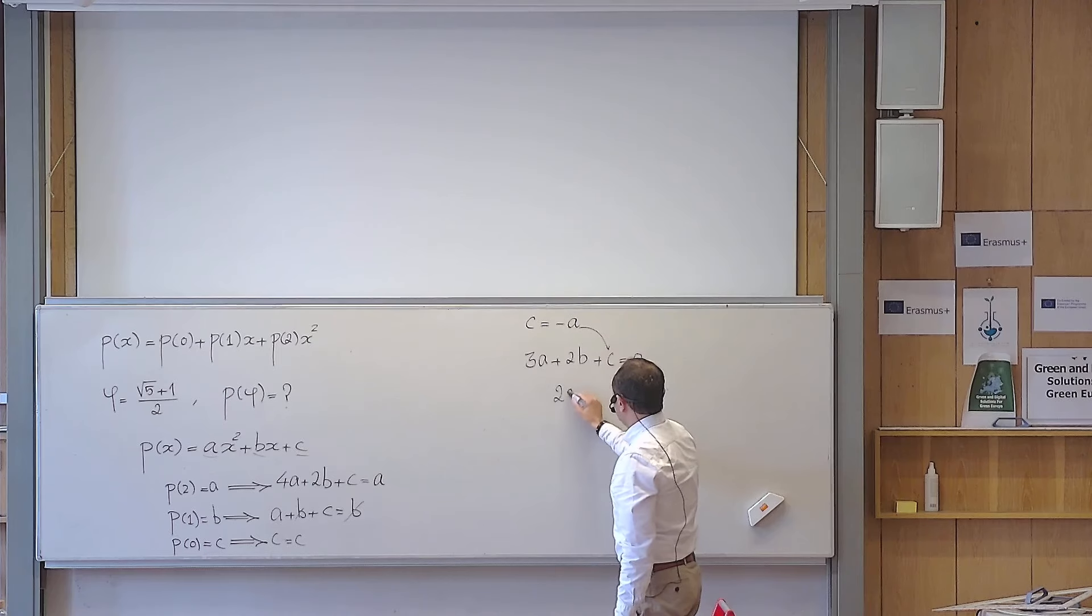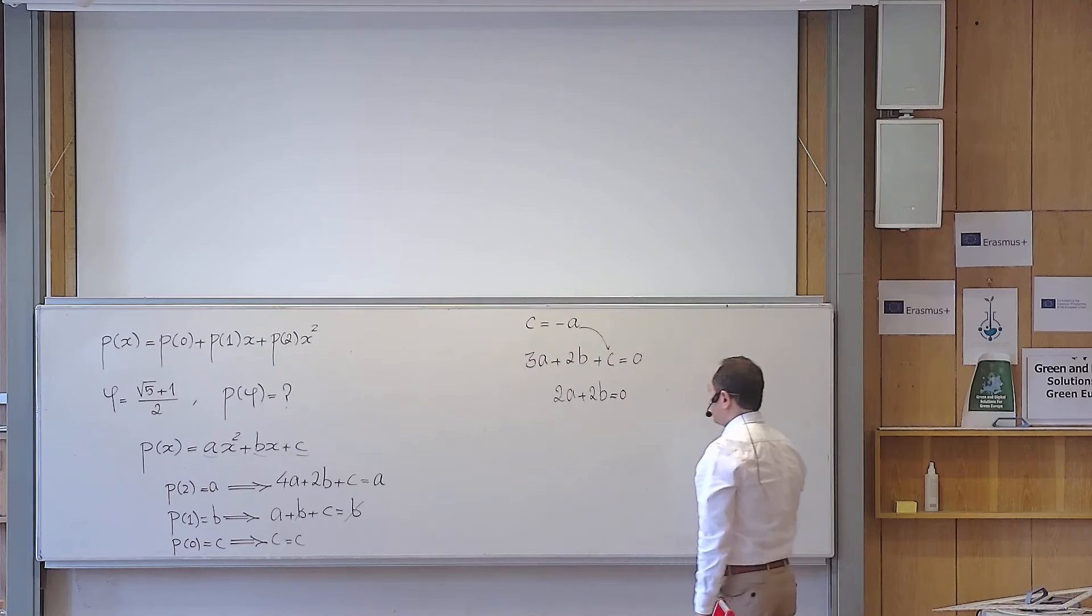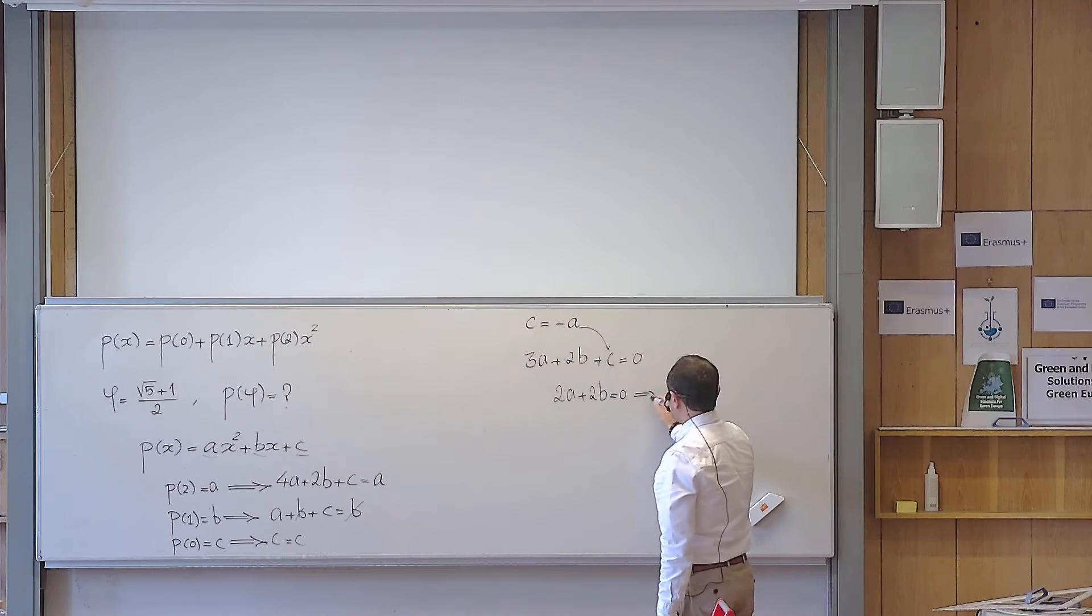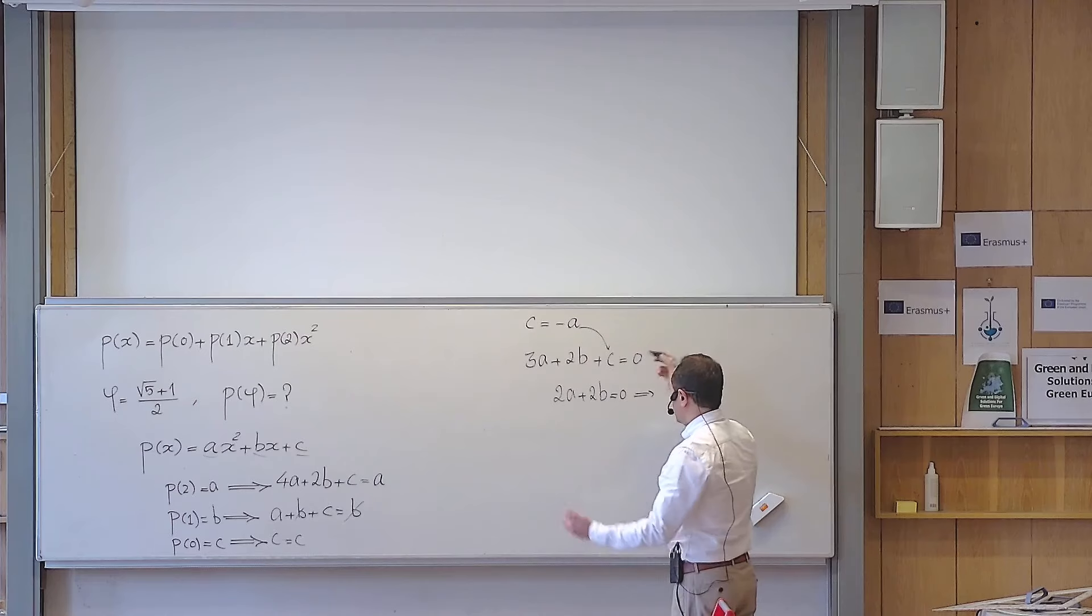3a minus a becomes 2a plus 2b equals to zero. And then what do I get from here? 2b is minus 2a. I divide by 2. So b is minus a.